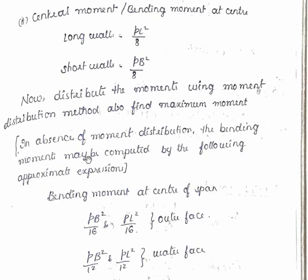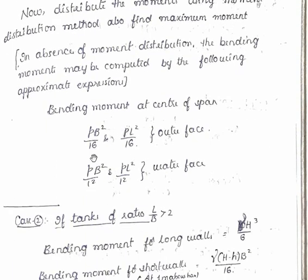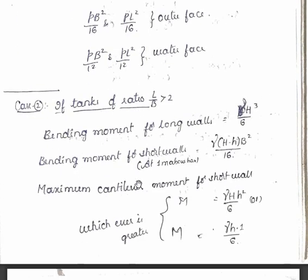In absence of moment distribution method, if you could not remember the moment distribution method which you have studied in lower classes, then you can also determine by using these approximate equations. That is what it says: in absence of moment distribution, the bending moments may be computed as the following approximate expressions. So bending moment at the center of span is given by Pb²/16, Pl²/16. These are for outer face, so these two values are for water face, I mean the face which is in contact with water.